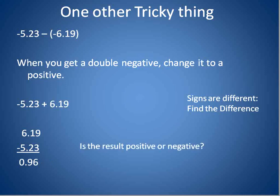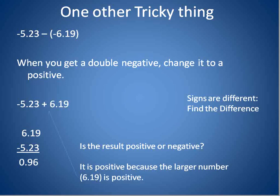I want you to think about this for a minute and think. Of all the questions that we've done and the things that we've gone over, is this result going to be positive or negative? The result will be positive because the larger number, 6.19, is positive. The larger number, 6.19, is positive. That means our result is going to be positive. So, that is how we subtract decimals.